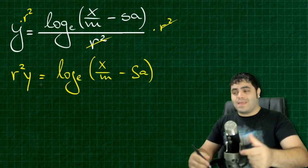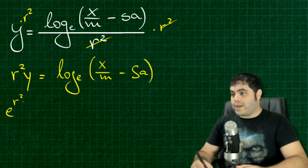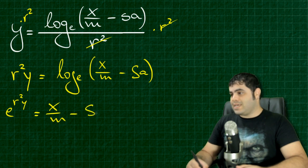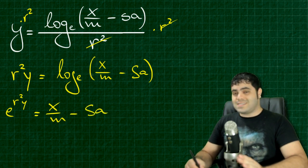This is the same thing as E to the R squared times Y is equal to this thing right over here, or X over M minus SA. This is the same thing, okay?